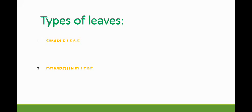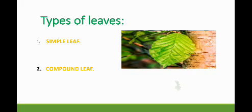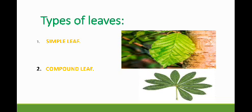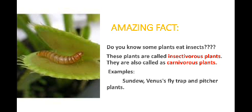There are two types of leaves: simple leaf and compound leaf. A compound leaf is like a mixture of simple leaves. An amazing fact: some plants eat insects, and these plants are called insectivorous — I-N-S-E-C-T-I-V-O-R-O-U-S. They are also called carnivorous plants. Carnivorous means meat eaters. For example: sundew, Venus flytrap, and bitter plant.